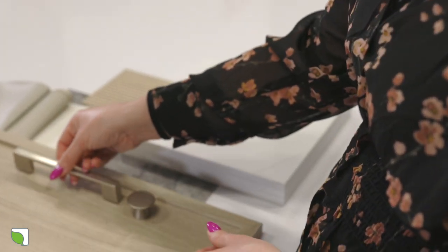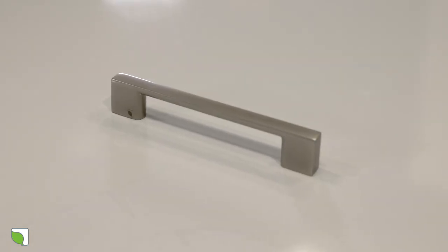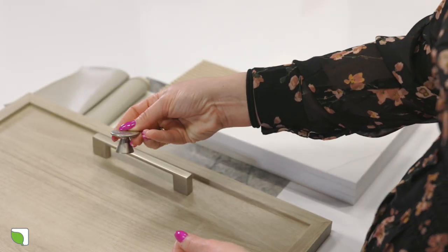And lastly I paired two different styles of Genesis hardware, one being a clean straight satin nickel and then the other being this just simple round knob.